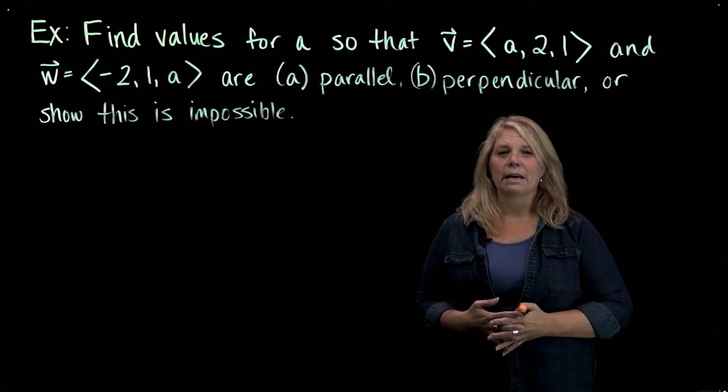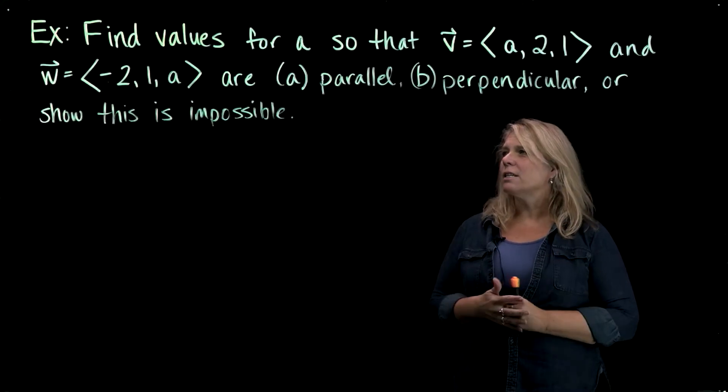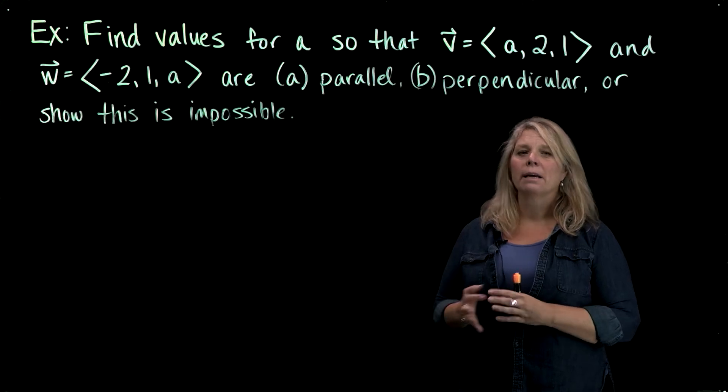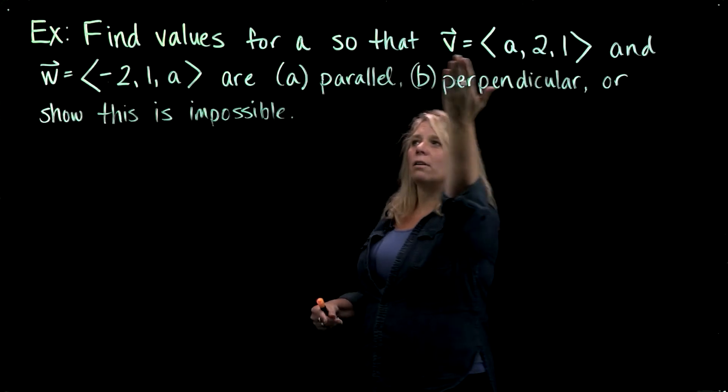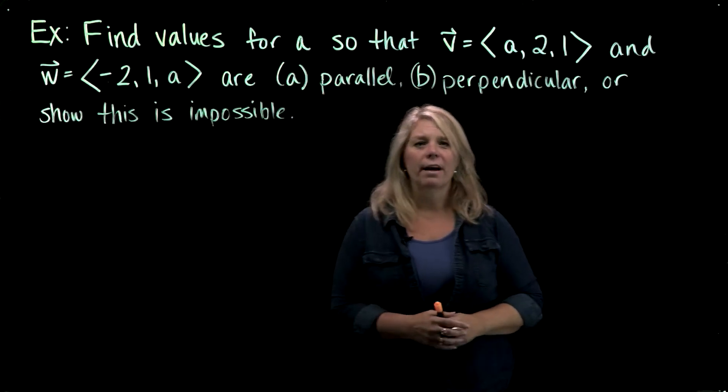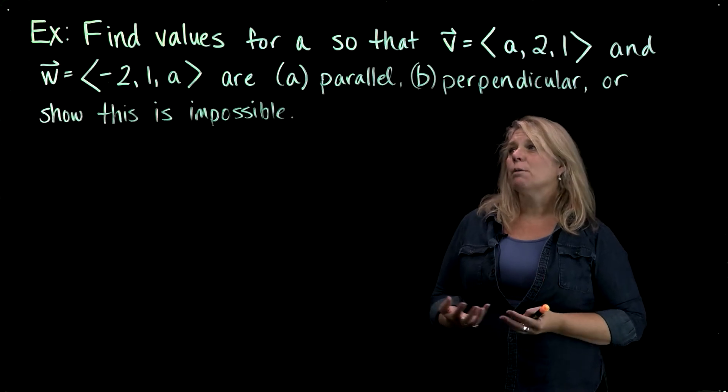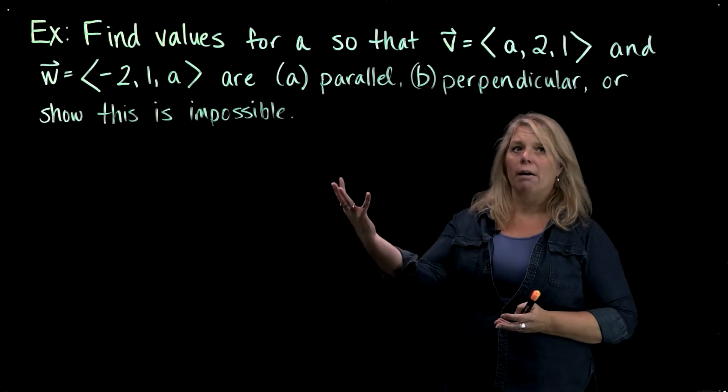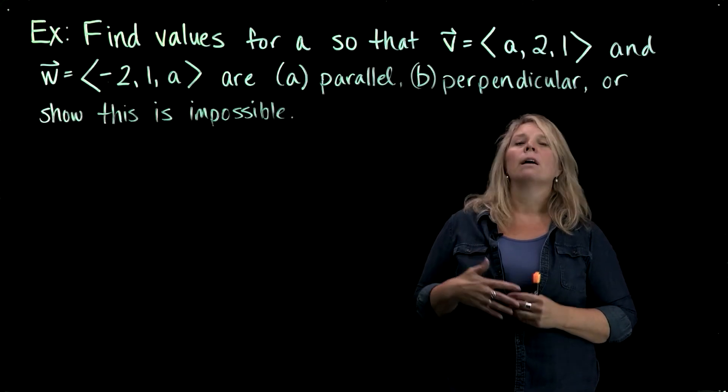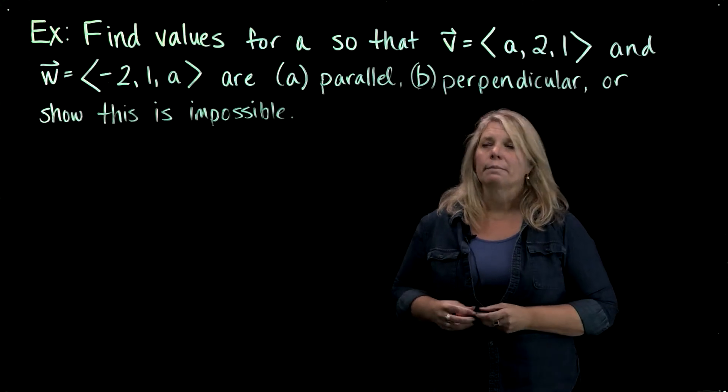Hi, we're going to look at an example here for two vectors, and we're supposed to determine some values for this unknown A, which shows up in both of our vectors here, to determine whether these two vectors could be parallel, perpendicular, or maybe that's impossible.